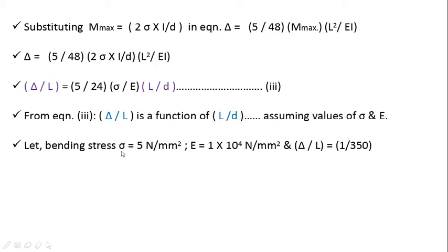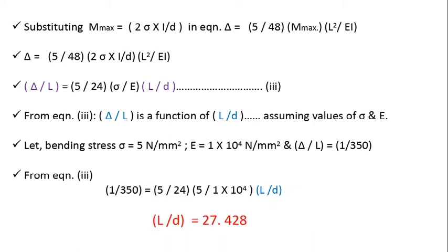For example, let us assume that bending stress is 5 N/mm² and Young's modulus for material is 1×10⁴ N/mm² or MPa. And as per one of the clauses of IS code already we have seen that Δ/L is 1/350. So therefore substituting all these values in equation 3: 1/350 = (5/24) (5/(1×10⁴)) (L/D). And therefore when I solve, L/D becomes 27.428. So by doing this we can calculate this span by effective depth. So it is 27.428 for the assumed σ and assumed Young's modulus.